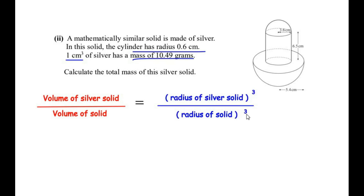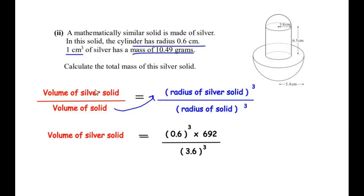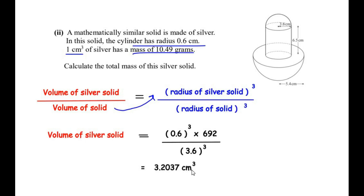The volume of the previous solid is 692 cubic centimeters from part one. So we write: volume of silver solid = (0.6)³ × 692 ÷ (3.6)³. The cylinder radii 0.6 and 3.6 are used as the corresponding lengths. Calculating this gives a volume of 3.2037 cubic centimeters for the silver solid.